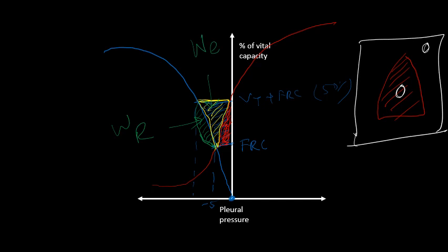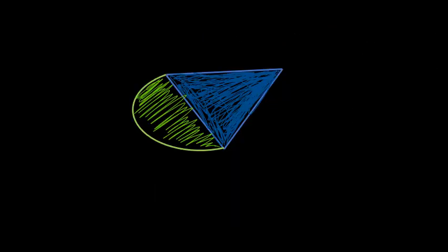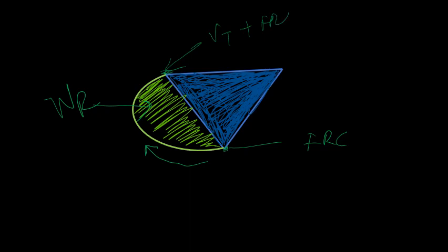So this is Campbell diagram in short. Again, what we see here is the green area is the resistive work. This is the FRC, the inspiration begins, and this is where the inspiration ends to tidal volume. This line represents the lung compliance and this line represents the chest wall compliance.